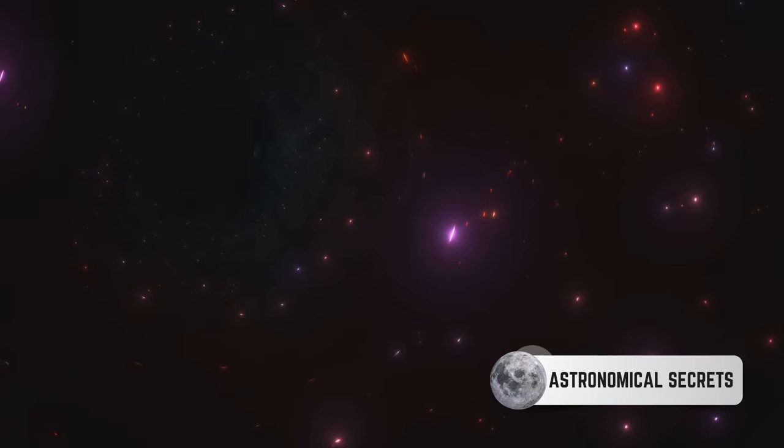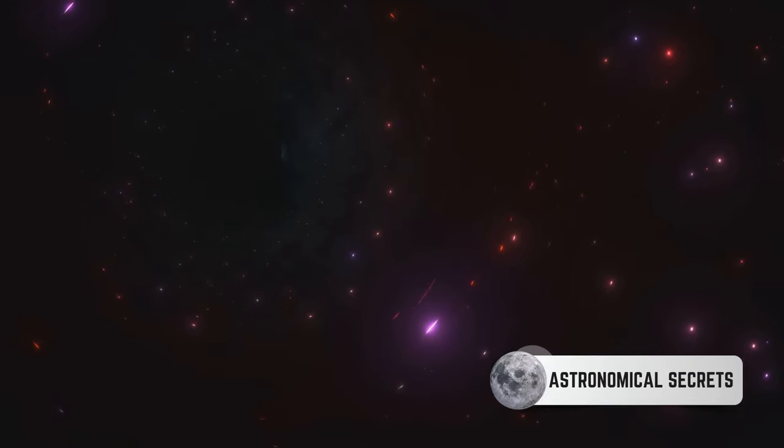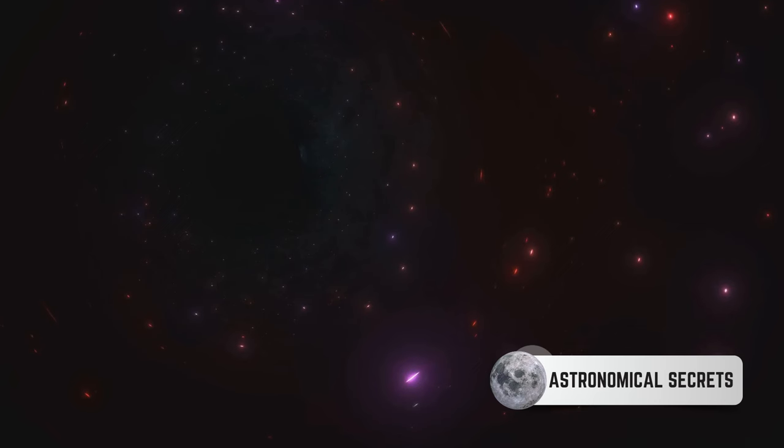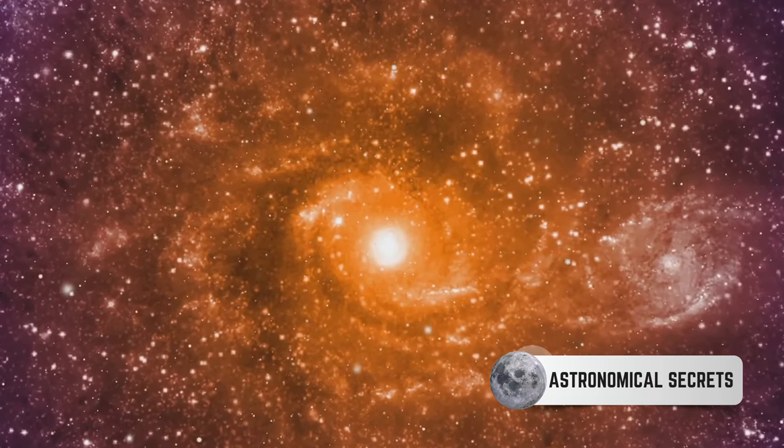This means they have less star-forming activity compared to their spiral and irregular counterparts. Essentially, they are like the senior citizens of the universe, filled with ancient stars that have been around for billions of years.